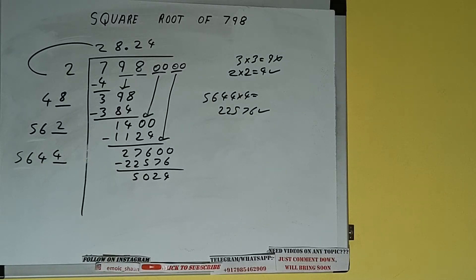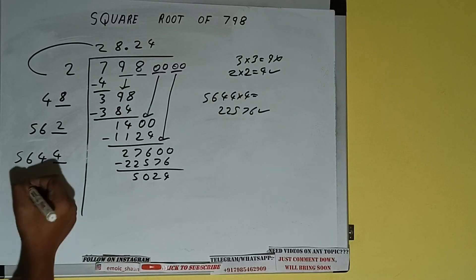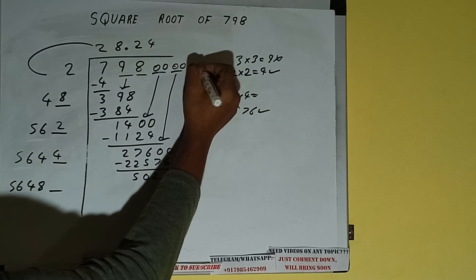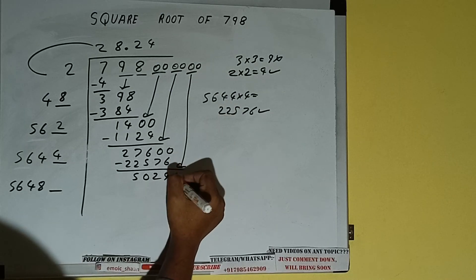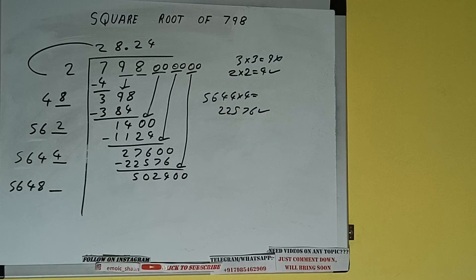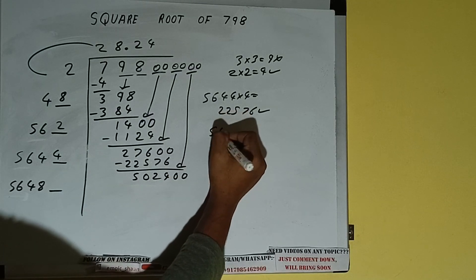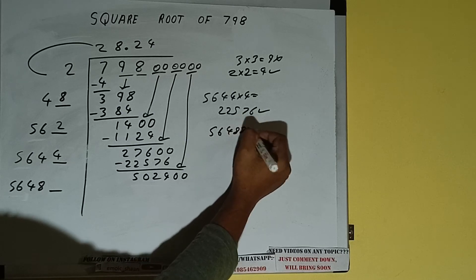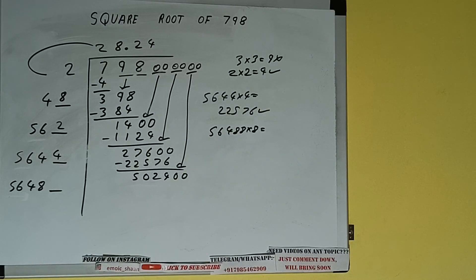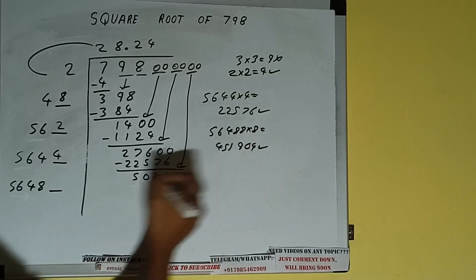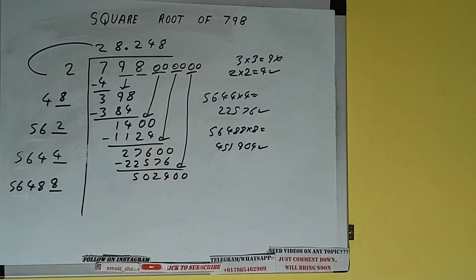22576 subtract, and we'll have 5024. 5644 plus 4 will be 5648, and one digit extra. Bring the next pair of zeros down, and it will be 502400. Compare 56 and 502: 56 times 9 is 504, so we cannot try 9 times. We have to try 8 times. 56488×8 = 451904, which is good to take. So write 8 here and 8 here.